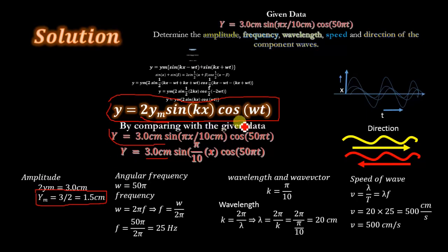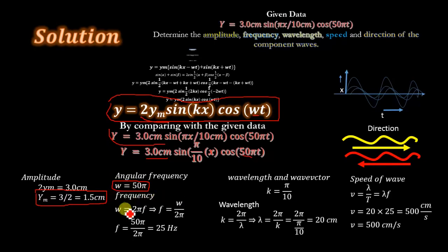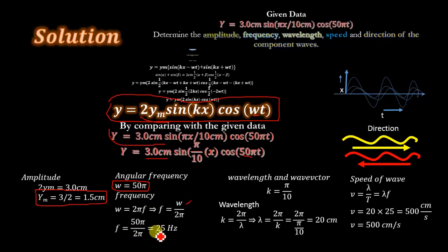Comparing cos(ωt) with cos(50πt), we get the angular frequency ω = 50π. Converting to linear frequency using ω = 2πf, we have f = ω / (2π) = 50π / (2π) = 25 Hz.